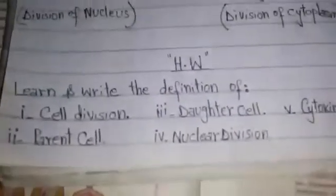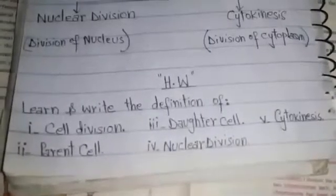This is our first lesson, and in this lesson we have defined some basic terms. Now it's your duty and responsibility to do the homework: learn and write the definitions of cell division, parent cell, daughter cells, nuclear division, and cytokinesis. You have to learn and write these five definitions in your notebook.